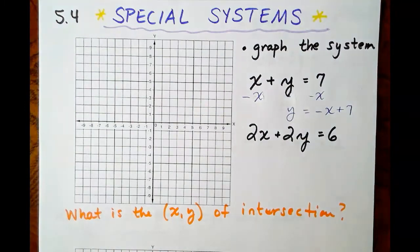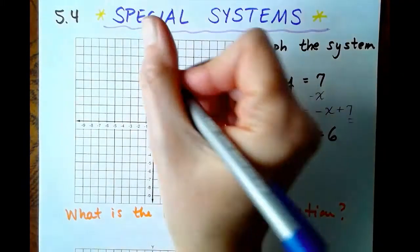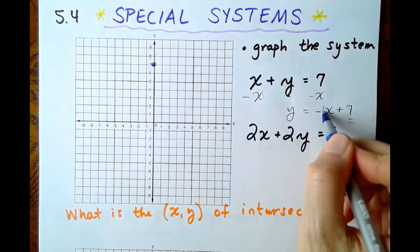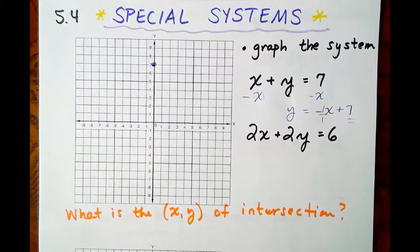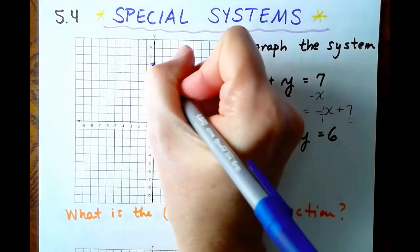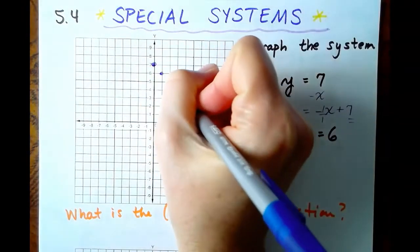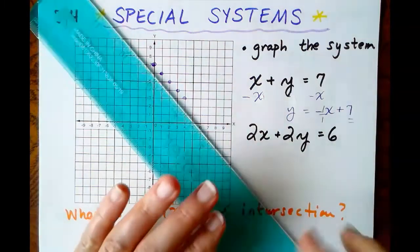Our first line has a y-intercept at 7 and a slope of negative 1 over 1. So down 1, forward 1, down 1, forward 1. Here is our first line.